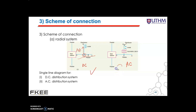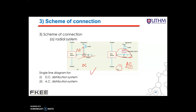Figure 2 shows a single line diagram of a radial system for AC distribution. The radial system is employed only when power is generated at low voltage and the substation is located at the center of the load. This is the simplest distribution circuit and has the lowest initial cost. However, it suffers from the following drawbacks: the end of the distributor nearest to the feeding point will be heavily loaded.